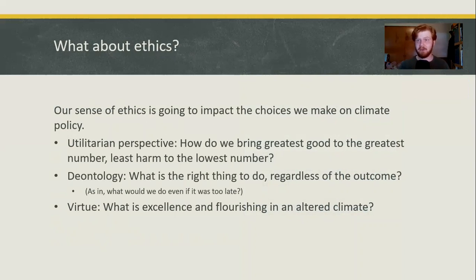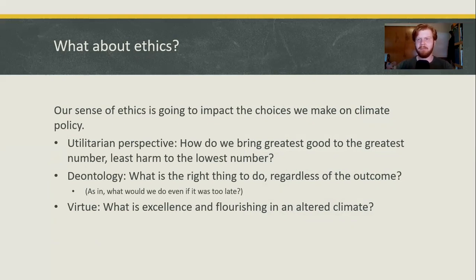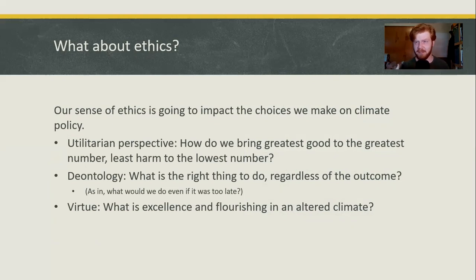How do we come up with climate solutions that cause the smallest amount of economic impact? Then deontology asks even different questions. Deontology's whole question is: what is the right thing to do regardless of the outcome? Applied to the climate, what would we do even if it was too late to reverse the climate crisis? Even if it's too late, the actions we would take to at least lessen things and promote the flourishing of other species — even after humans are no longer able to stay on this planet — those would still be moral goods worth pursuing as a species and as a society.